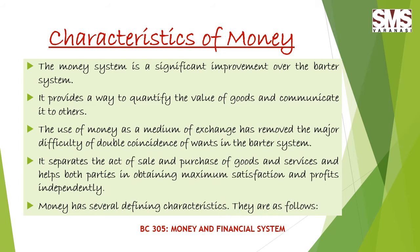Before discussing the detailed characteristics of money, in the barter system there were some problems like the double coincidence of wants. And it is not possible to measure the value as a medium of exchange because of its perishability. So in order to overcome such problems, money was defined and it rectifies the major problems of medium of exchange as well as the double coincidence of wants.